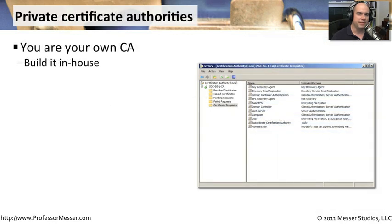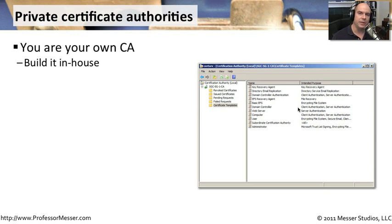Private CAs are certificate authorities you're building in-house. It may be something built into the Windows operating system, like the certificate authority I have listed on my server, or one that you're building with another piece of third-party software — but it's one that you're building from scratch.